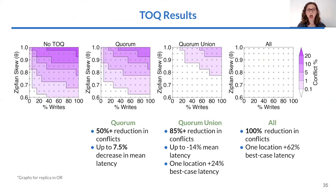Our results show that TALK significantly reduces conflict rates. With just the quorum sync group, we see a minimum of 50% decrease in conflicts, corresponding to an up to 7.5% decrease in mean latency. With the quorum union, we saw at least 85% reduction in conflict and up to 14% decrease in mean latency, but one location had a 24% increase in best-case latency. We were able to completely eliminate conflict when syncing to all replicas, but this caused a prohibitive increase in best-case latency.